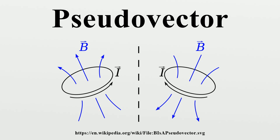In mathematics pseudovectors are equivalent to three-dimensional bivectors, from which the transformation rules of pseudovectors can be derived. More generally, in n-dimensional geometric algebra, pseudovectors are the elements of the algebra with dimension n-1, written lambda n-1 of R^n. The label pseudo can be further generalized to pseudoscalars and pseudotensors, both of which gain an extra sign flip under improper rotations compared to a true scalar or tensor.